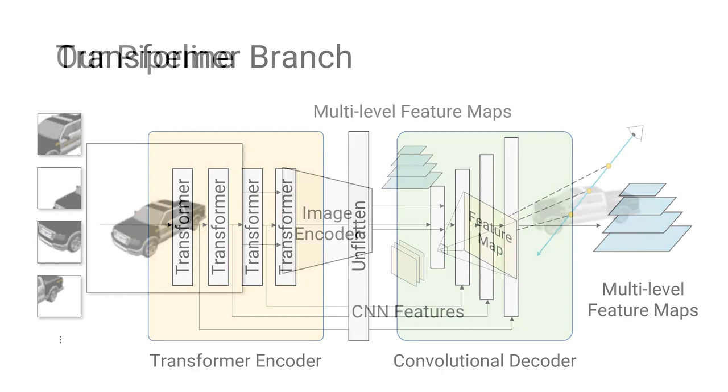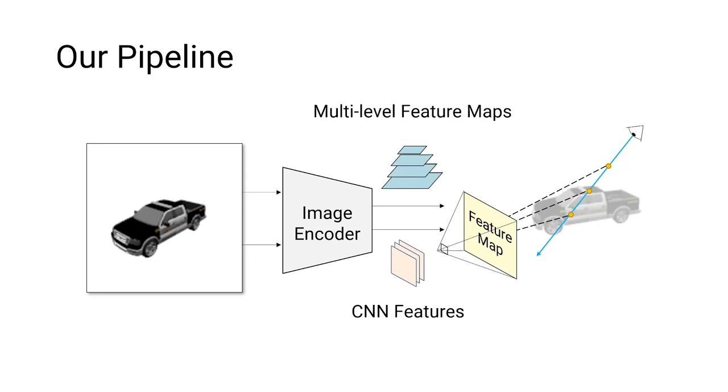Finally, we combine the multilevel feature maps as well as the features from the CNN branch by concatenation, and use the per-pixel features to condition the NERV MLP and render the final image.